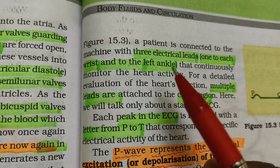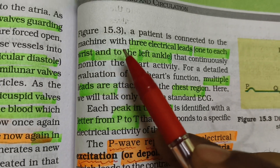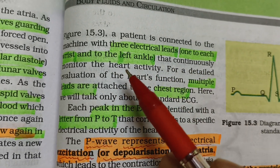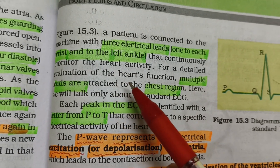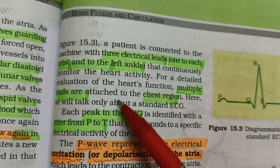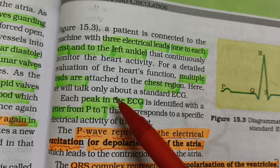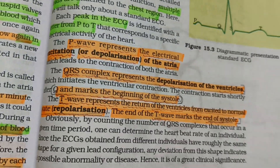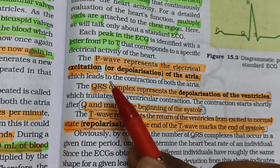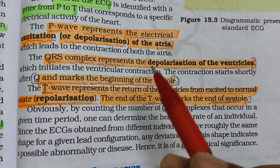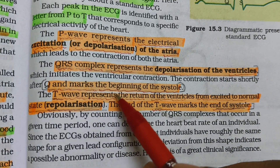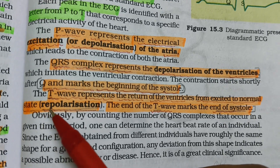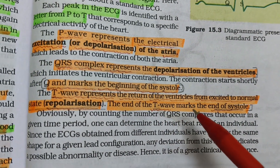An ECG is recorded by connecting a patient to a machine with three electrical leads — one to each wrist and one to the left ankle — to continuously monitor heart activity. Multiple leads attached to the chest region provide detailed evaluation. In a standard ECG, the P wave represents the electrical excitation or depolarization of the atria. The QRS complex represents the depolarization of the ventricles and marks the beginning of systole. The T wave represents the return of the ventricles from the excited to the normal state (repolarization). The end of the T wave marks the end of systole.